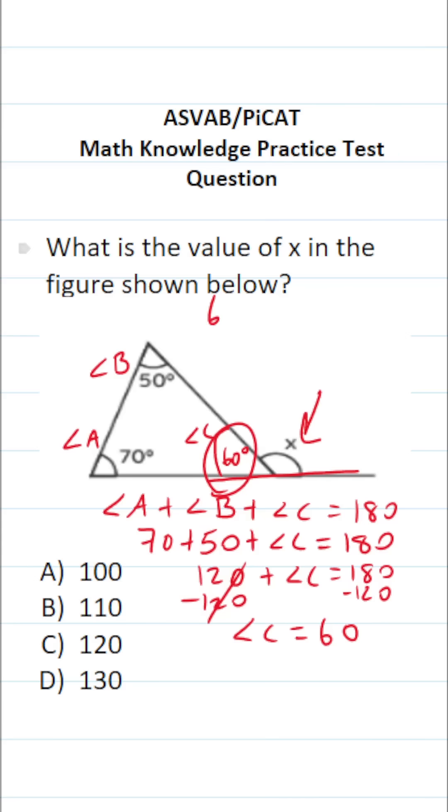So in other words, 60 degrees plus the measure of angle x has to equal 180 degrees. Now we can determine the value of x by subtracting 60 from both sides.